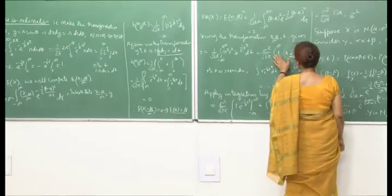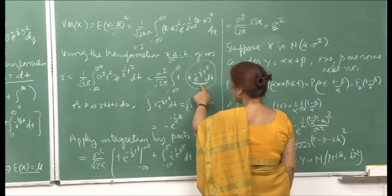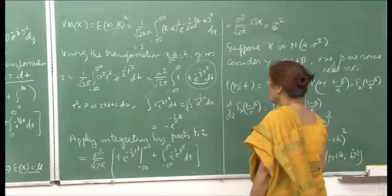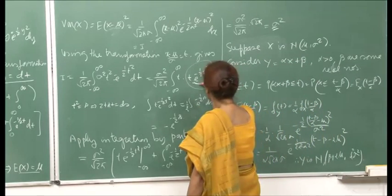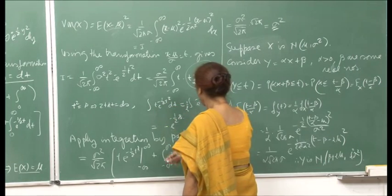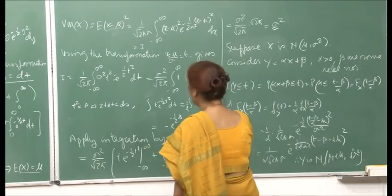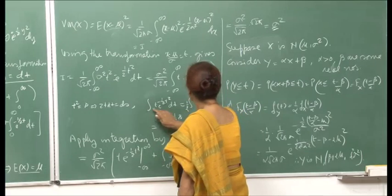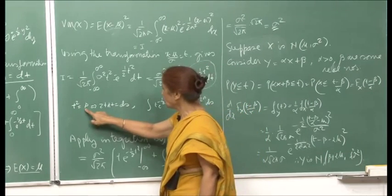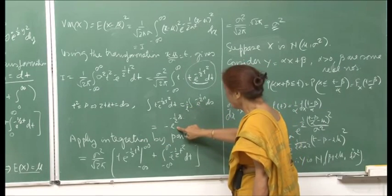We will do integration by parts. This will be my first function — that means I take the integral of this, multiply by this, and then the derivative of this into the integral of this. This is your formula. Now, this integral: I have shown that t e raised to minus half t squared dt is equal to half; when I make the transformation t squared = s, then 2dt = ds. Applying integration by parts, the integral of this is minus e raised to minus 1 by 2 s. So this will be t into e raised to minus half t squared from minus infinity to infinity, which you can see is 0.